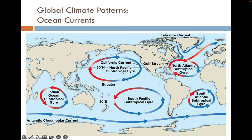Ocean currents also play a role. The warmest energy hitting at the equator sends warm air in the northern hemisphere flowing northwest, so in the northern hemisphere the ocean currents spin clockwise, while in the southern hemisphere they move counterclockwise.